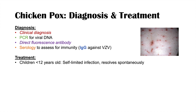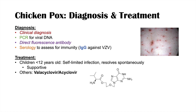How do we treat chickenpox? If a child is less than 12 years of age, it is generally a self-limited infection that resolves spontaneously, so treatment is supportive. For individuals older than 12 years of age, we can use valacyclovir or acyclovir. Prevention using the MMRV vaccine — mumps, measles, rubella, and varicella — can help reduce the severity and rates of chickenpox.